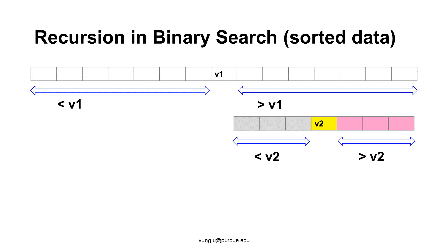As you can see, this algorithm follows the three components of recursion. First, there is the recurring pattern. Second, the array to be searched gets smaller and smaller — this is the change. Third, the search stops when X is found or the array has no elements left. This method is called binary search and it is very efficient.